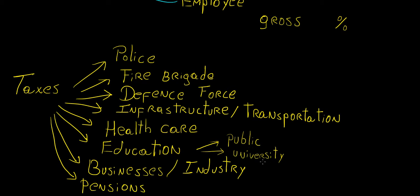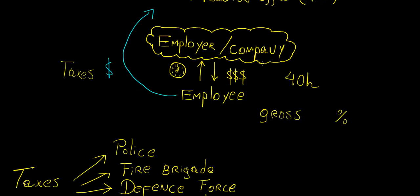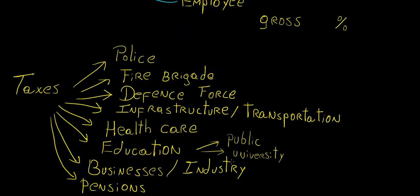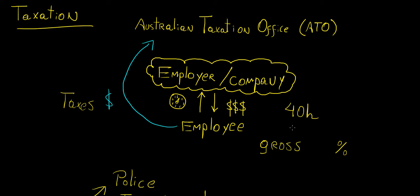Taxes also go into businesses and industries. If you consider the company you're working for, taxes may go to that company depending on its affiliation with the government. Or it could go into the industry — if the country has a lot of exports, they need to make sure the industry is getting funding so they can keep that rolling. A country cannot sustain itself just on taxes; companies need income from selling products to other nations.